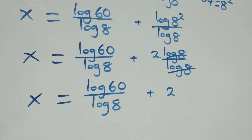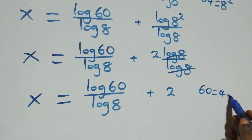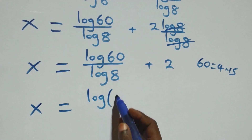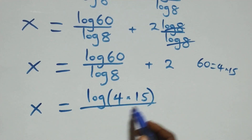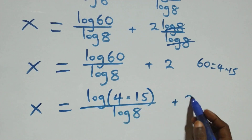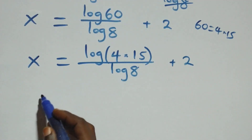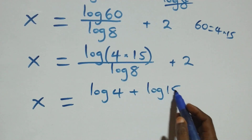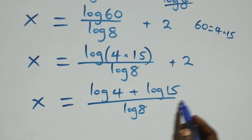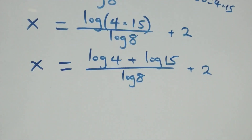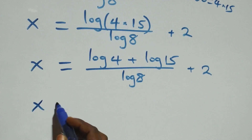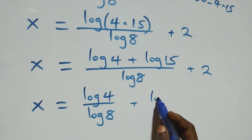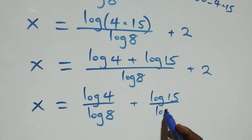Now sixty can be written as four times fifteen. So x equals log of four times fifteen over log eight plus two. Applying the product rule, this becomes x equals log four plus log fifteen, all over log eight, plus two. Separating into two fractions: x equals log four over log eight plus log fifteen over log eight plus two.